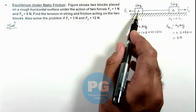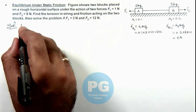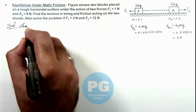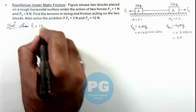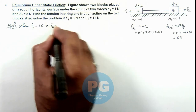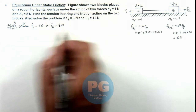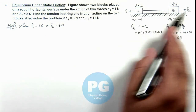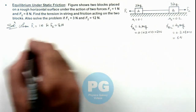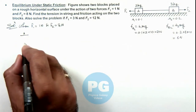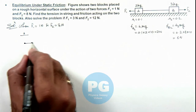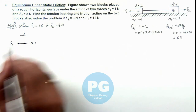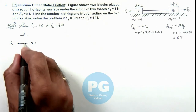Now if we draw the free body diagram of the 2 blocks, in the first case when F1 is 1 newton and F2 is 8 newton, obviously as the second force is more, this block has a sliding tendency toward right. So we can draw the free body diagram of block A: it experiences tension toward right and force F1 toward left, with F1 equal to 1 newton.